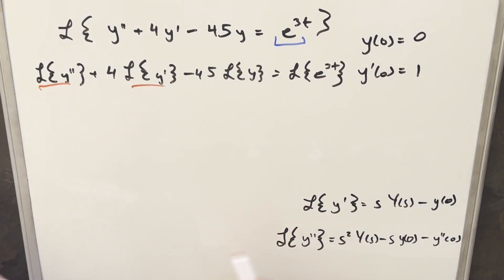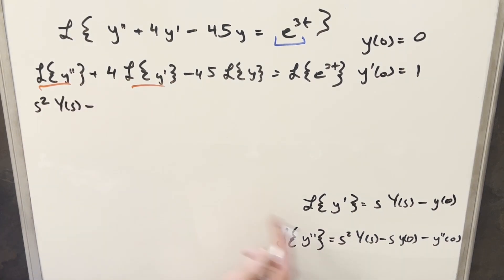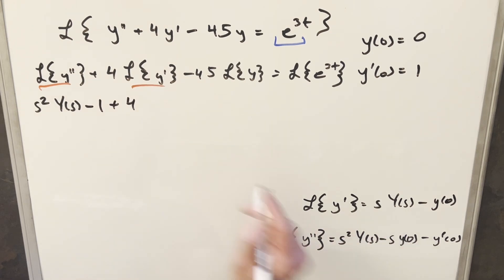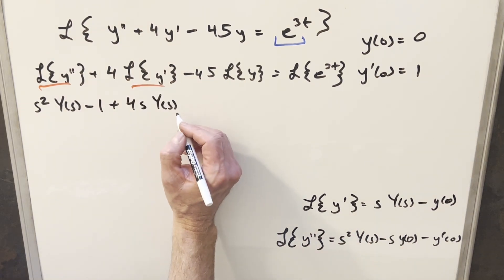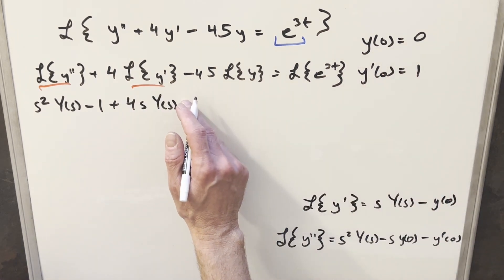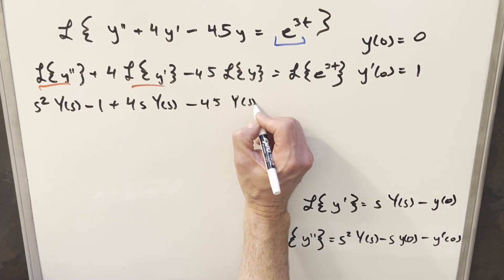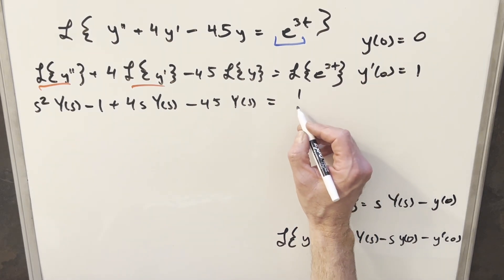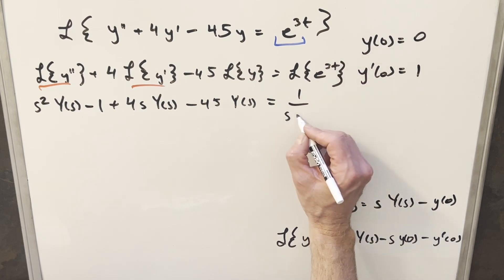For the derivative terms we'll use the formulas derived in other videos and just plug everything in. This gives us s squared times Y(s) minus s times y(0) minus y'(0). But y(0) is 0, so we leave that term off. And I should note this is y single prime at 0, and that value is just 1, so we get minus 1. Then plus 4 times sY(s) plus 4 times y(0), but that's just 0. Then minus 45 Y(s). On the right side, the Laplace of e to the at is 1 over s minus a, and here a is 3, so this is 1 over s minus 3.